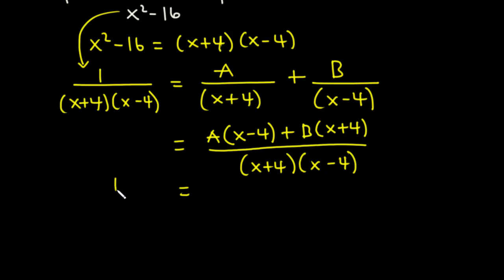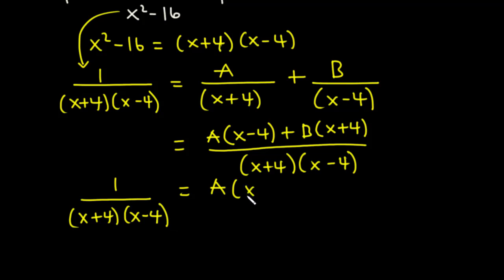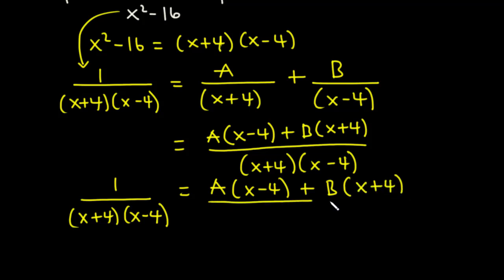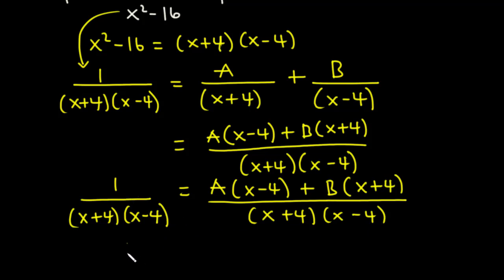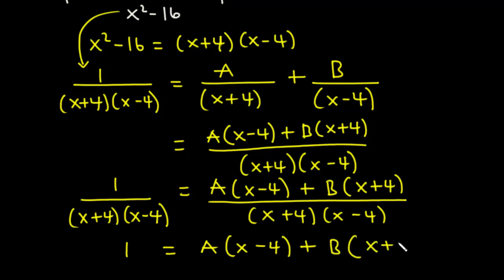So we have 1 over (x + 4)(x - 4) equal to [A(x - 4) + B(x + 4)] divided by (x + 4)(x - 4). Comparing the numerators, we have 1 = A(x - 4) + B(x + 4).